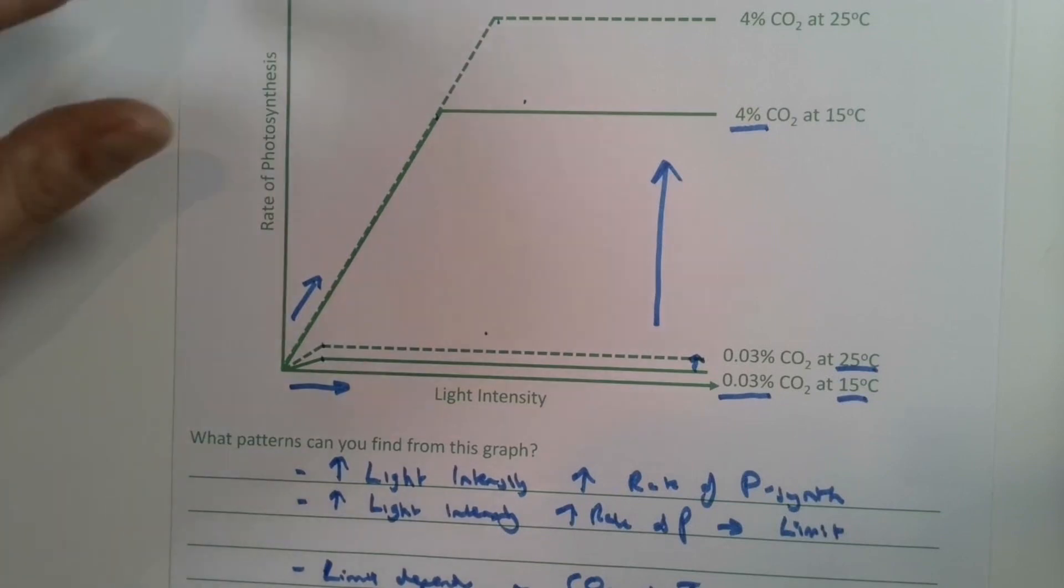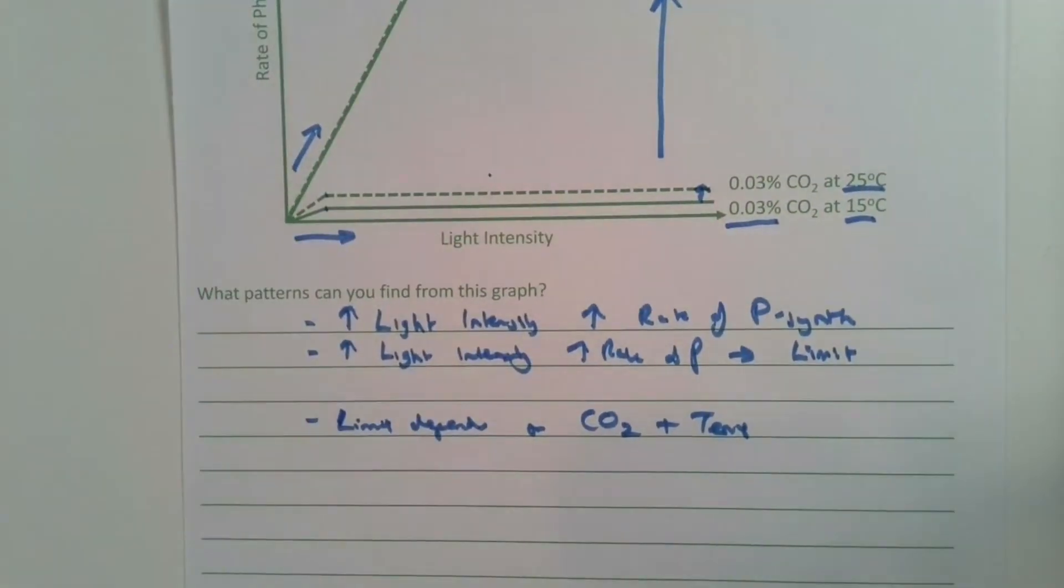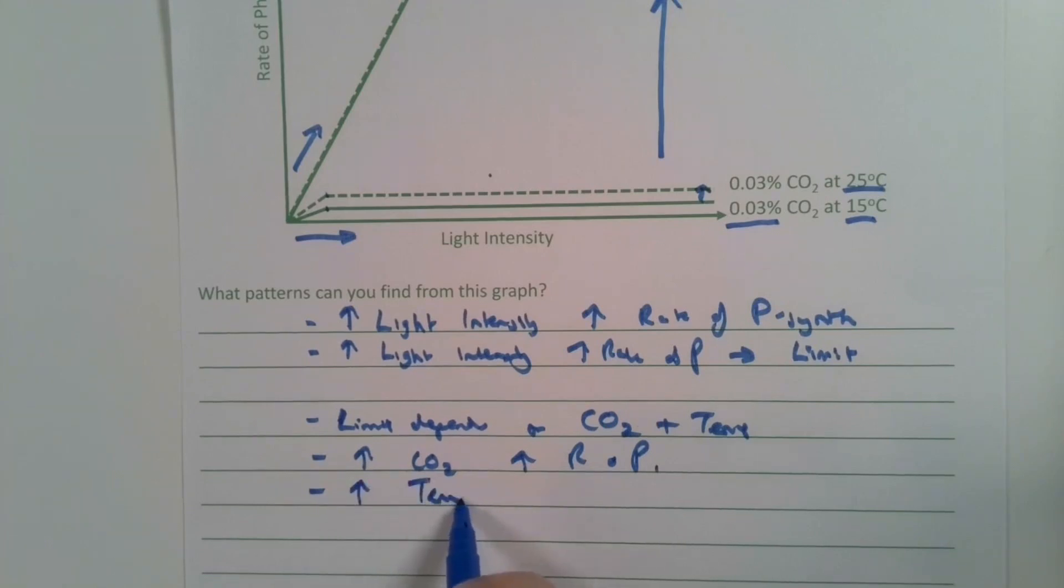This will help us to get the fourth and fifth marks. Increasing the CO2 increases the rate of photosynthesis, and increasing the temperature increases the rate of photosynthesis. There we've got our five marking points to get us four marks on the question.